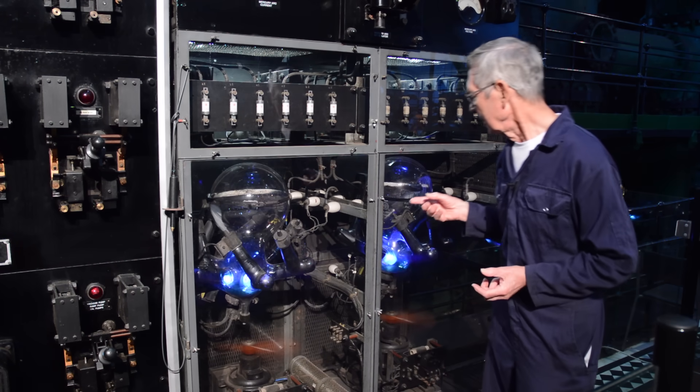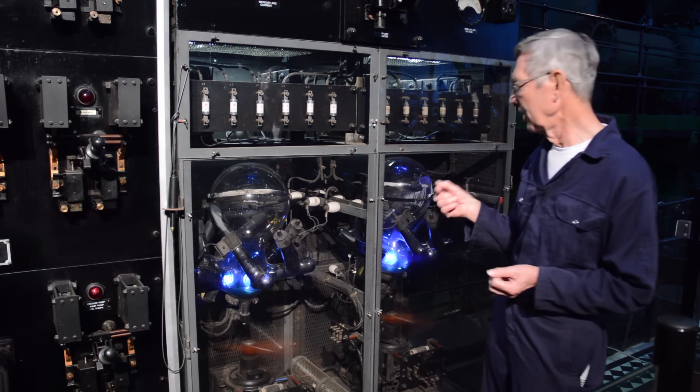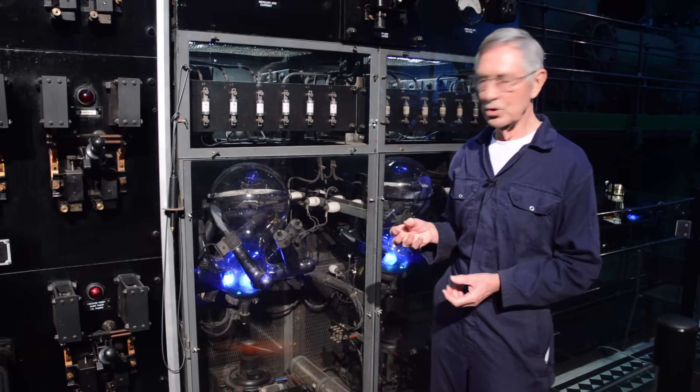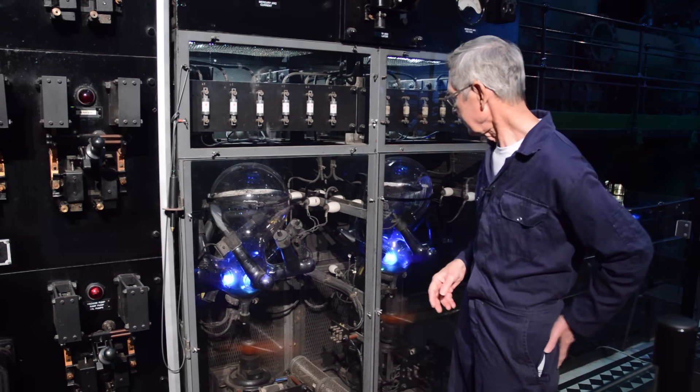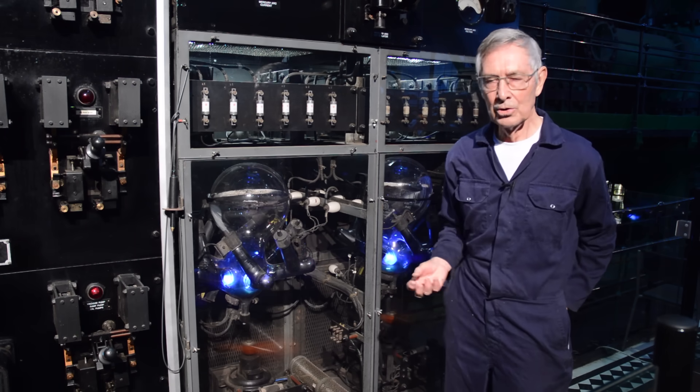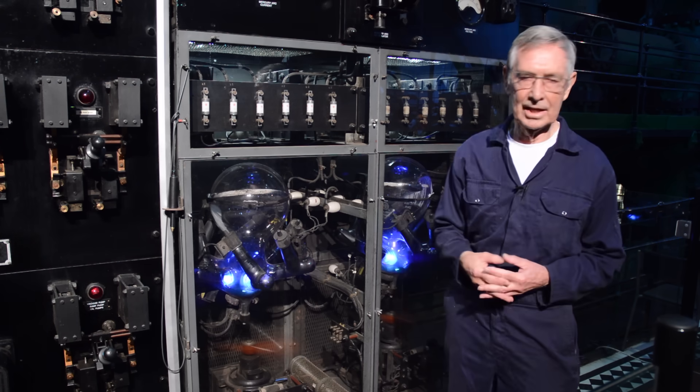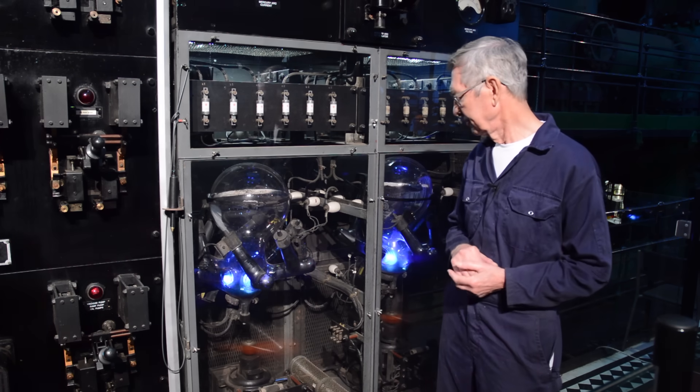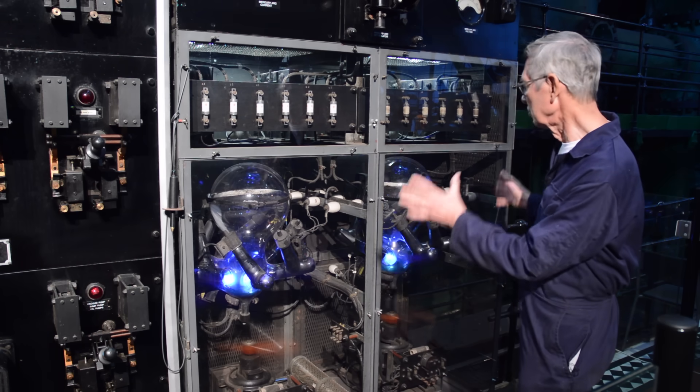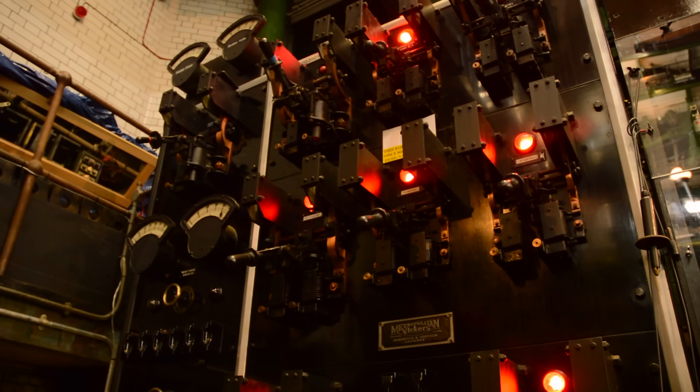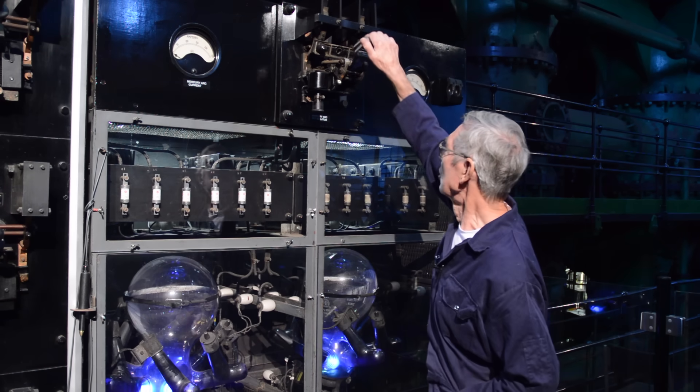Now you'll see that because the electricity is flowing through the mercury vapor, the mercury vapor glows this characteristic blue-green color. The more current we pull through the arc, the brighter it becomes, and we can demonstrate that in just a moment. But to do so, I need to connect the rectifiers. These two rectifiers work in parallel to the main DC switchboard, and we do this with the switch at the top here.